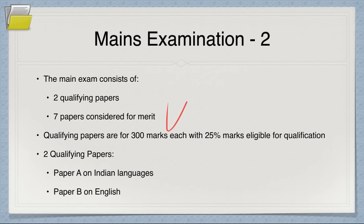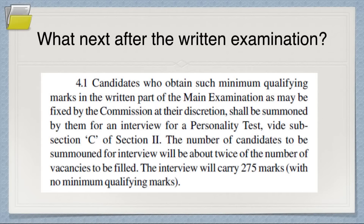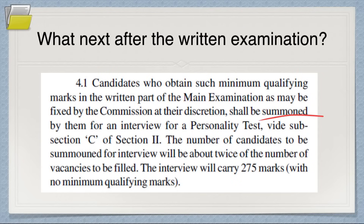Each of the seven merit papers is worth 250 marks, giving 1,750 marks, plus 275 marks for the interview, totaling 2,025 marks. That's GS Papers 1 to 4, essay, and two optional papers. The optional may be removed next year but wait for the notification. The qualifying papers are 300 marks each, and you need to score at least 25 percent — that is 90 marks — in each qualifying paper.